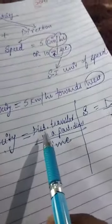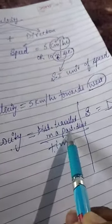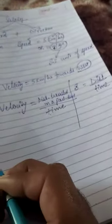Can we give direction to distance traveled? If you remember, distance in a particular direction is defined as displacement. That is known as displacement.